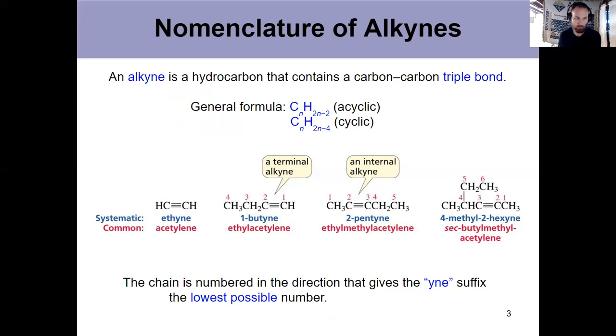Just like with alkenes, you number the chain in whatever direction gives you the lower number for the functional group. And our alkynes have a Y-N-E, an eyn suffix. Again, we're just worried about systematic names here. One new term that I want you to be on the lookout for is a terminal versus an internal alkyne because that's going to be important for our synthetic applications. If the C-C triple bond is at the end of the molecule, that is a terminal alkyne. If it's anywhere else, to the inside of the molecule, it's called an internal alkyne.